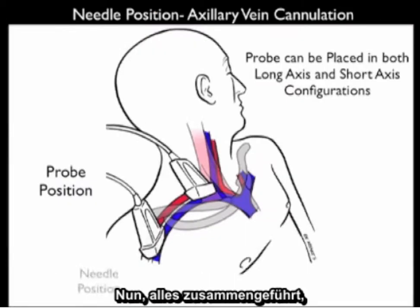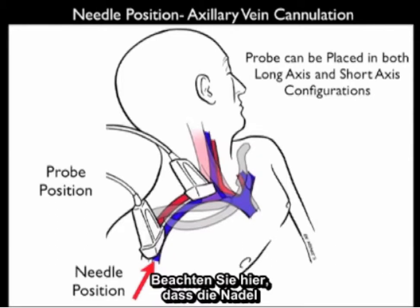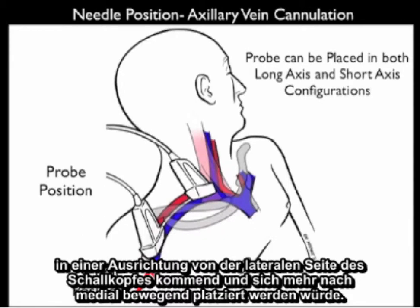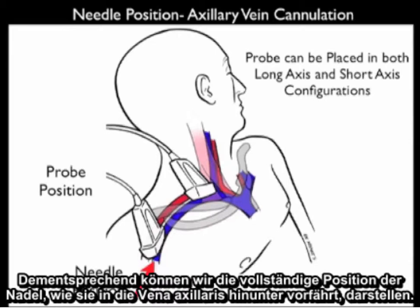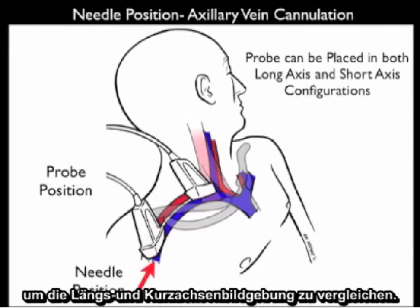Putting it all together — here is the probe position for cannulation of the axillary vein in the long axis orientation. The needle is placed coming in under the lateral aspect of the probe and moving more medially, allowing imaging of the full position of the needle as it moves down to the axillary vein. In the next few images we'll also show the probe placement for short axis cannulation to compare both orientations.